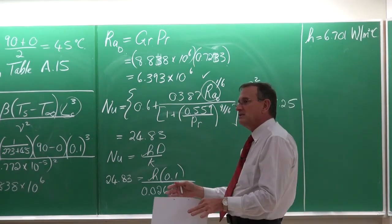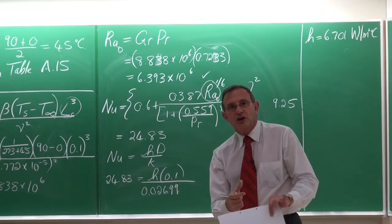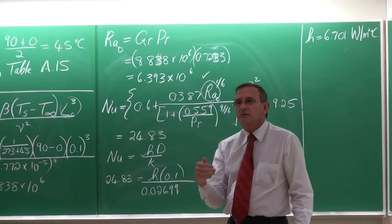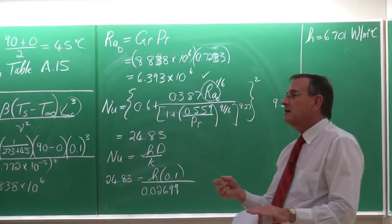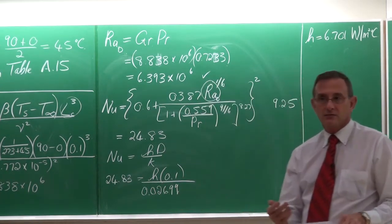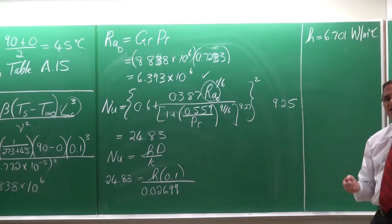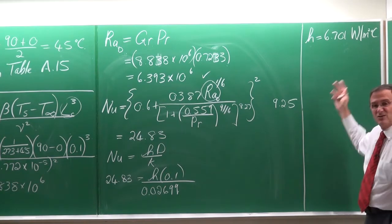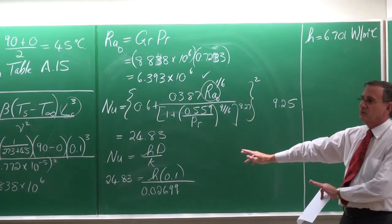If we've got single-phase forced convection — water, air, or something like that — heat transfer coefficients are normally on the order of thousands. If we've got condensation or boiling, then the heat transfer coefficients are on the order of tens of thousands. This is always something important to realize, so you know whether your answer is about right. If the answer was 6,701, you should know something is wrong.